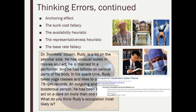I don't want to succumb to the base rate fallacy — where I say this person so closely represents my prototype that I ignore the base rate of this occupation in the population. I'm going to focus on the numbers and say he's a farmer. If he's not a farmer, he's a lawyer — those are my two guesses and I'm sticking with it.